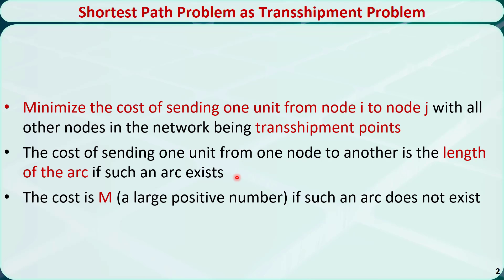The cost of sending one unit from one node to another is the length of the arc if such an arc exists. If there is no arc between these two nodes, we can think of the cost as a large positive number denoted by M.